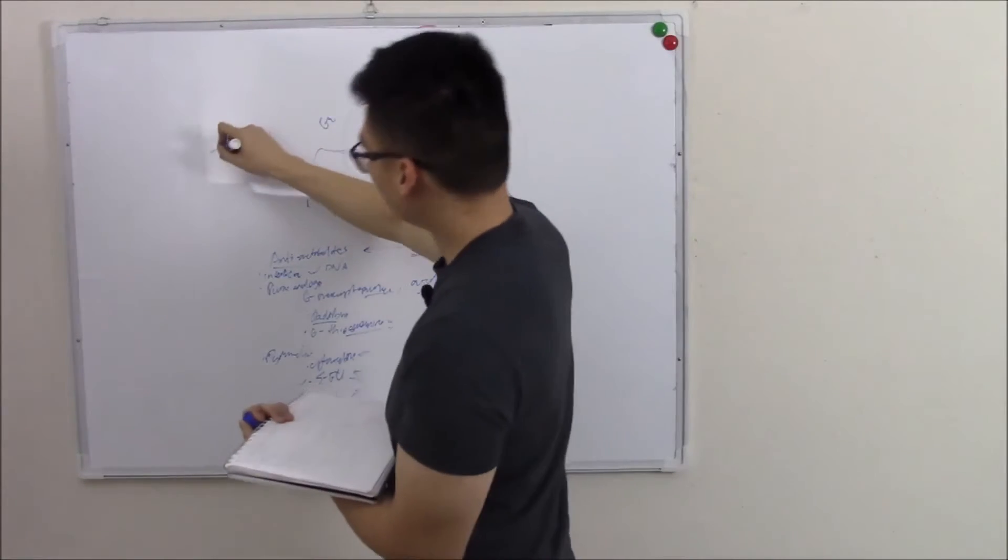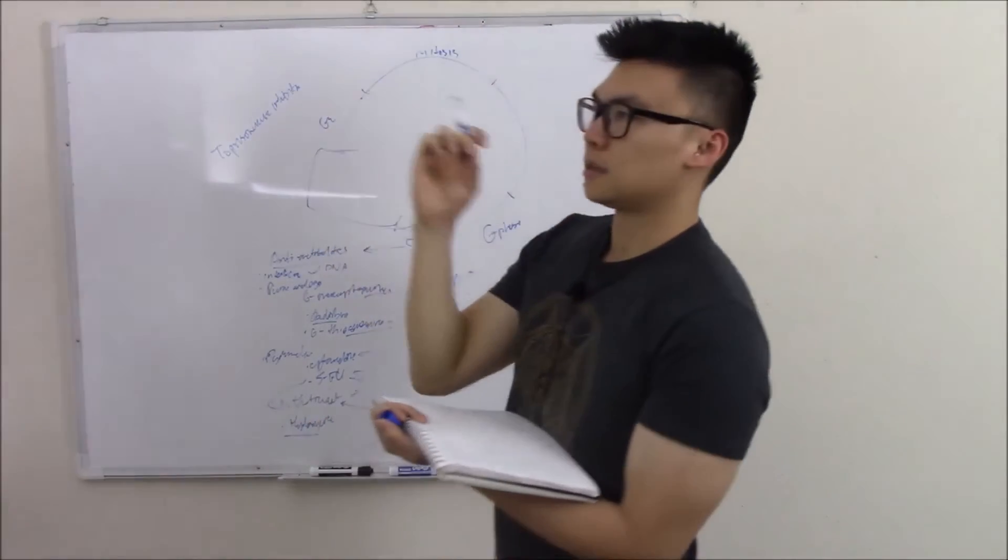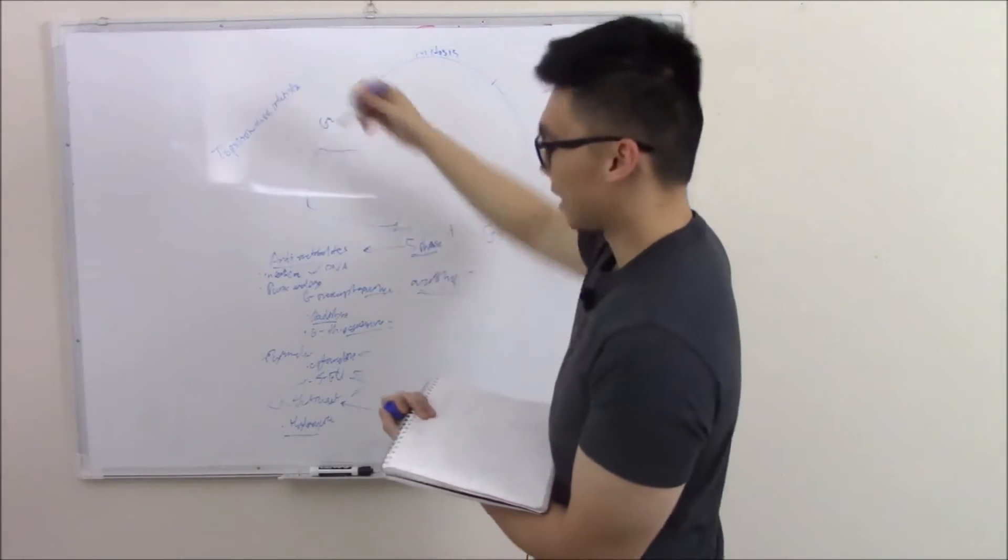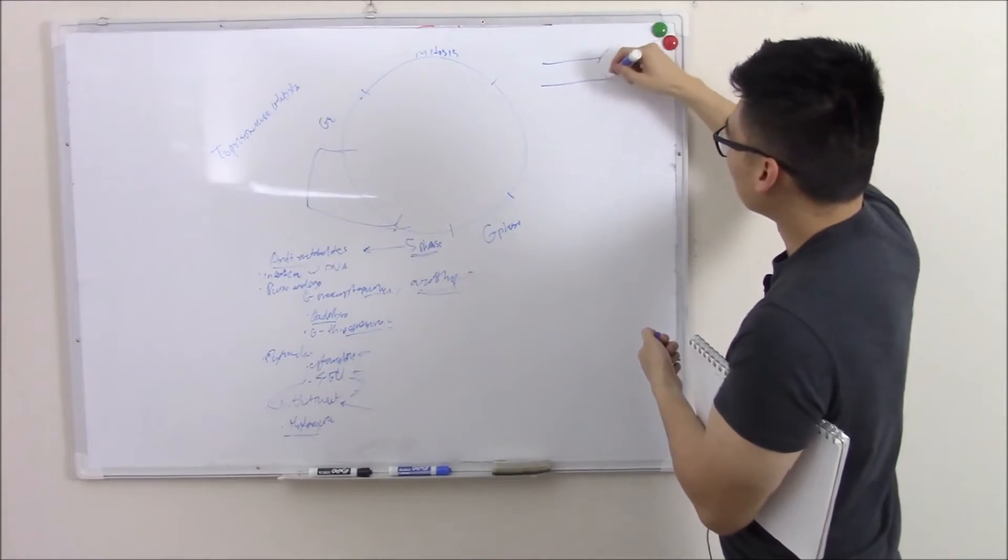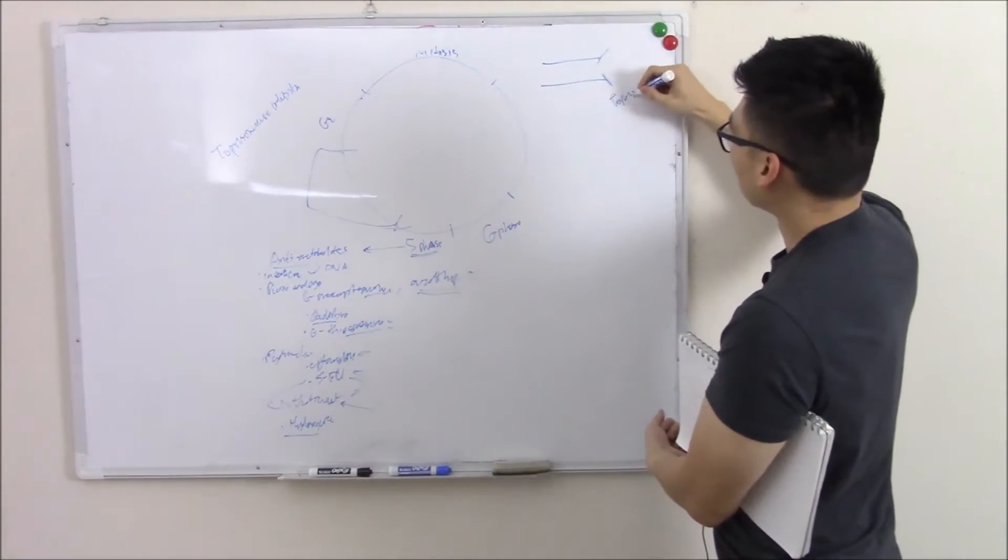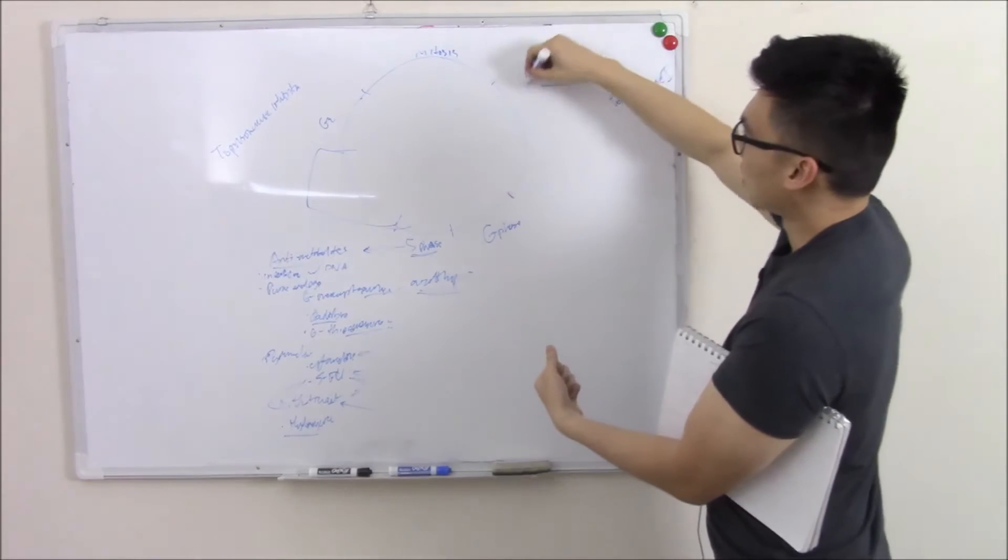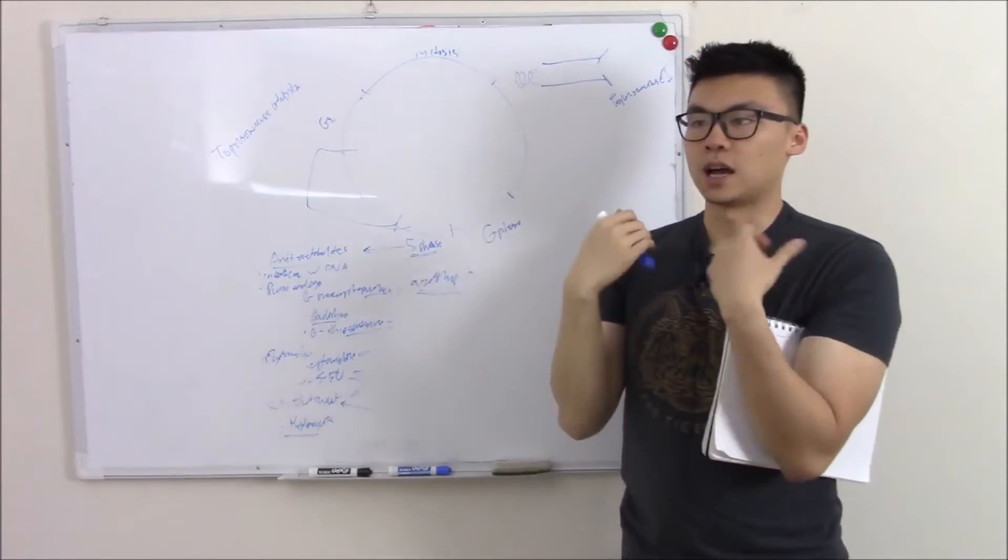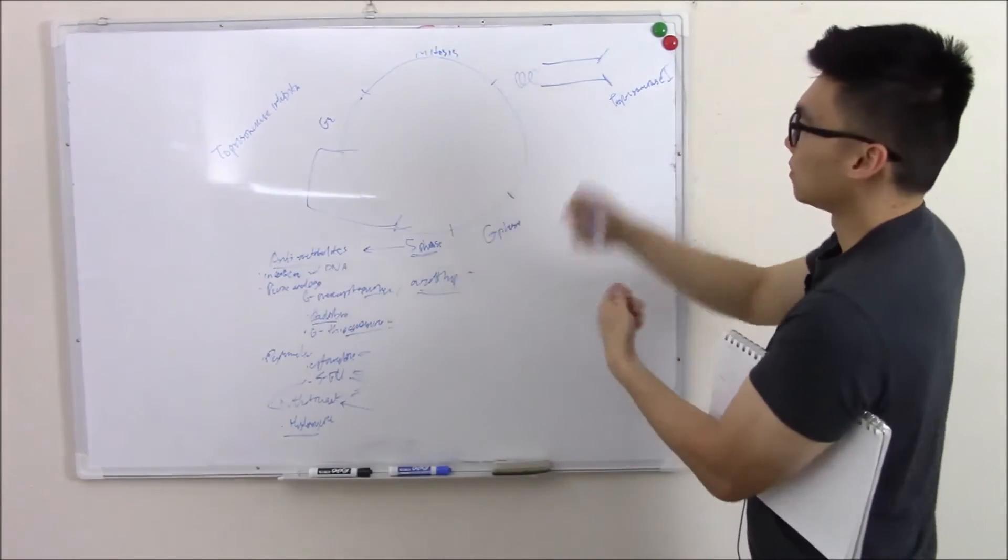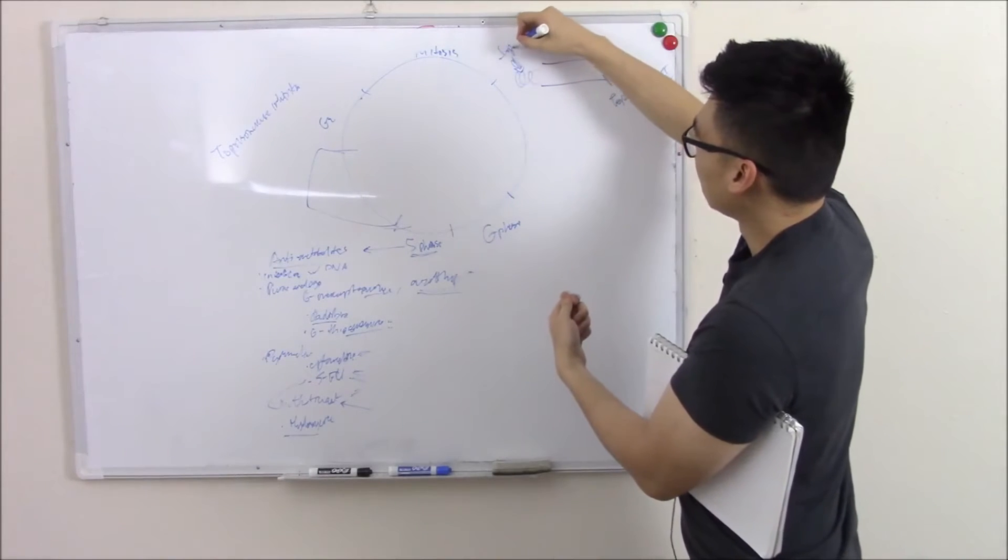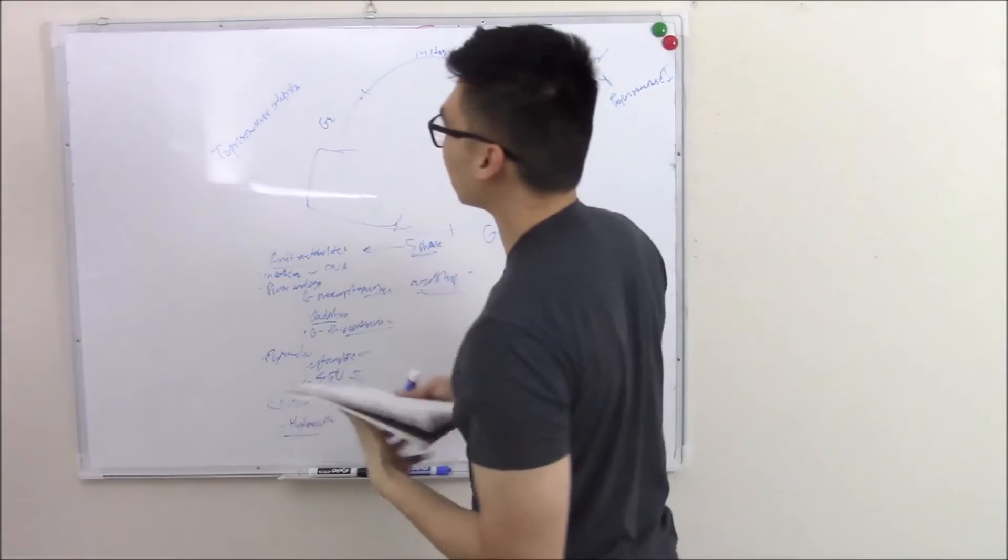The next group will be topoisomerase inhibitors. These are non-cell cycle specific. However, they have a special affinity for S-phase and G2-phase. Just to recap, topoisomerases, when you're undergoing DNA replication, you're going to break the two strands apart to make that replication fork. Topoisomerase 1 helps with that. And as you break that fork open and break those strands open, you cause this winding, a lot of tension. My favorite analogy is if you have tangled headphones and you pull on each of the headphones, it'll just make that knot worse. Here's no difference. And we can relieve that with topoisomerase 2. That cuts the strands and relieves it.